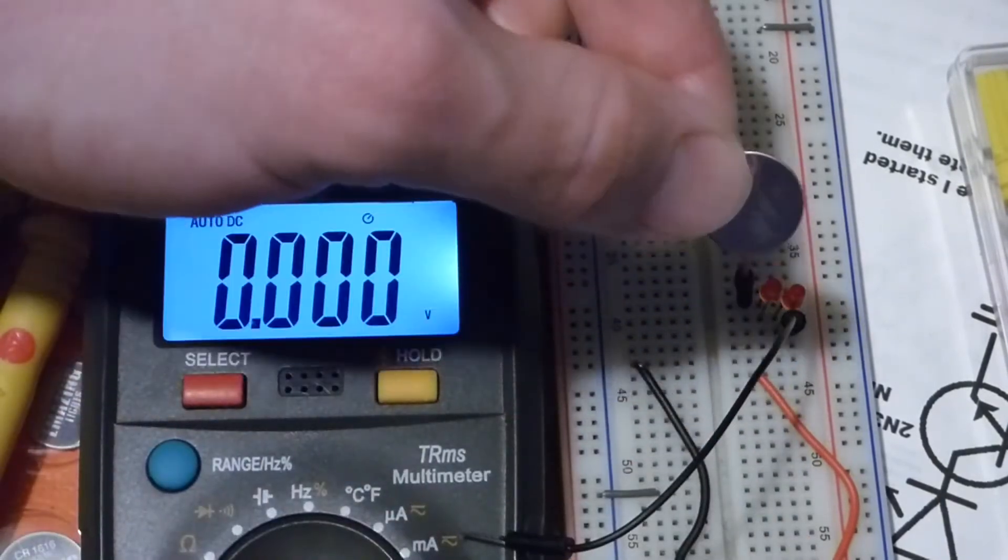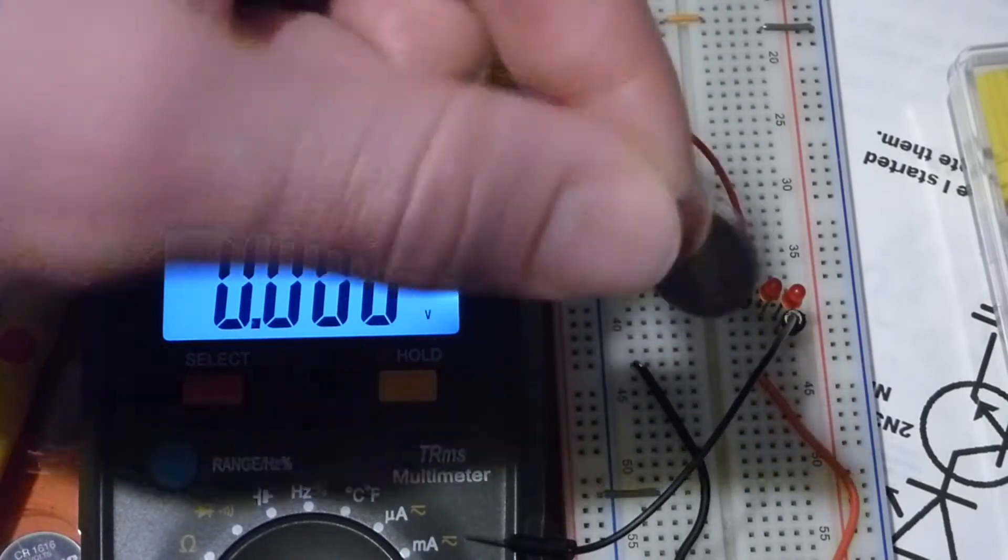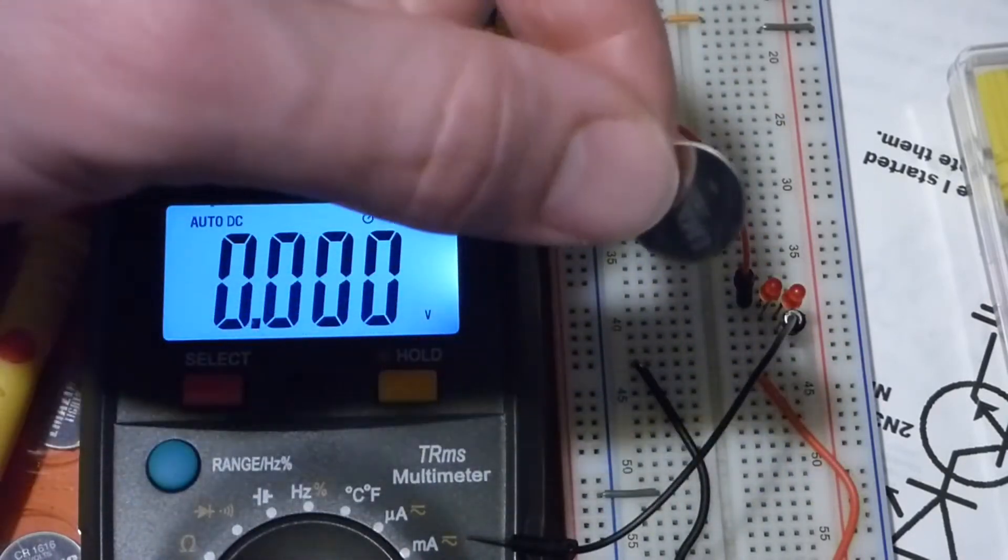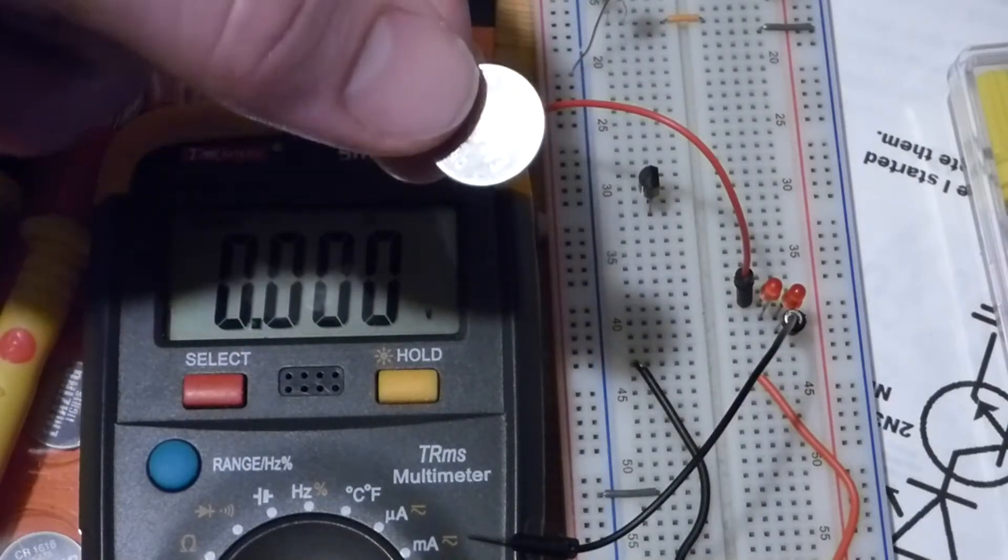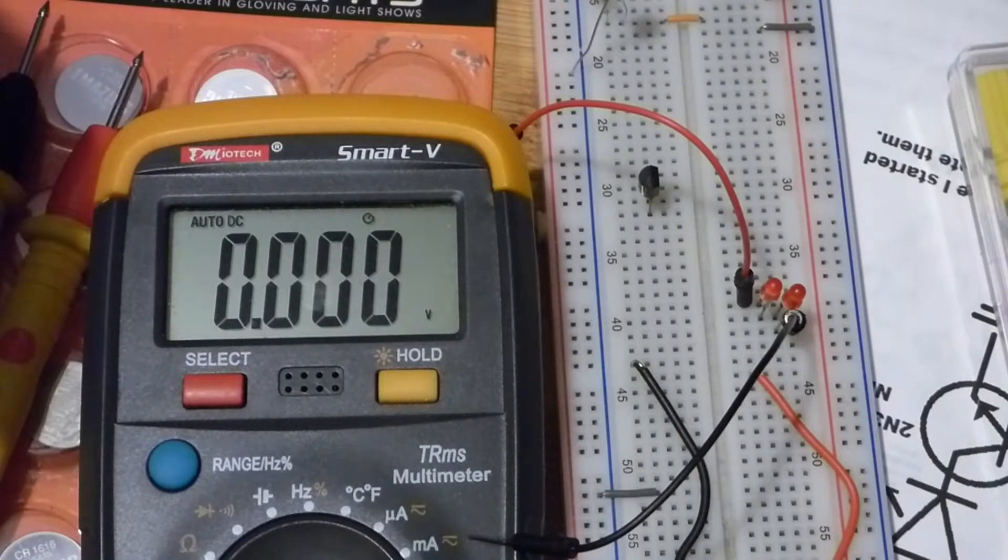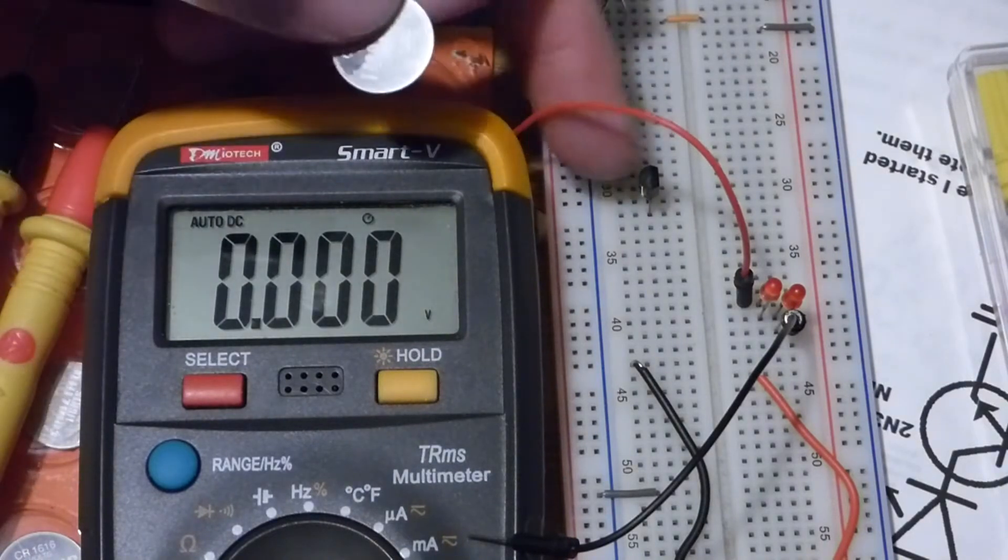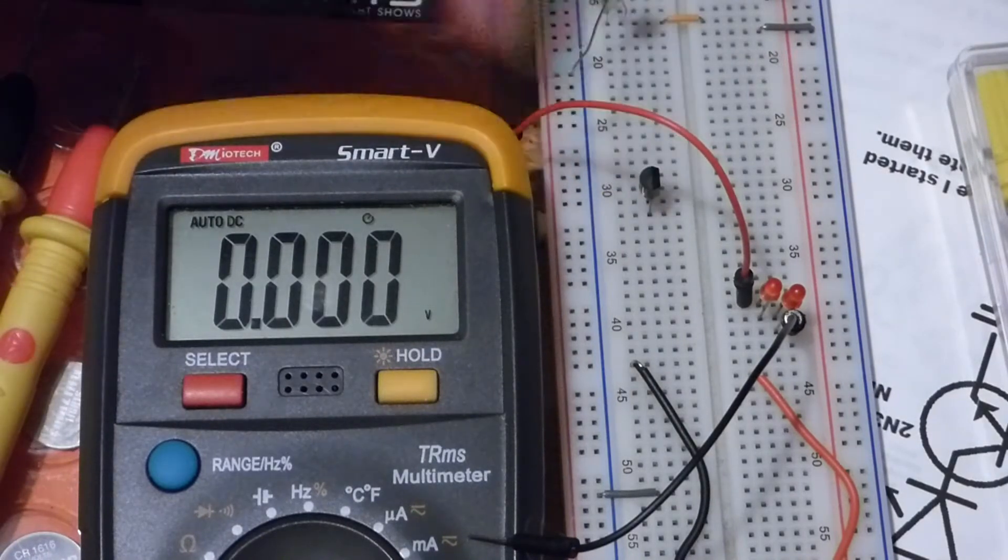But in any case, the voltage they're blocking is close to the voltage that this battery is supplying. And so we can't really do much with this battery directly with the LEDs, which is why we're going to use the transistor.